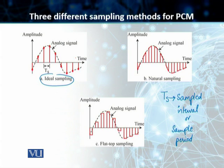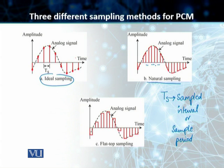In most cases, we have natural sampling. In natural sampling, we have a high-speed switch which is turned on for a small period of time, and it takes samples at an interval of TS, which is our sampling period. The shape of these samples still resembles the analog signal — we are just sampling it at multiple intervals with different amplitudes.